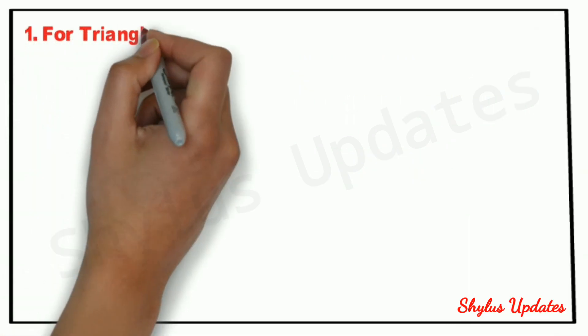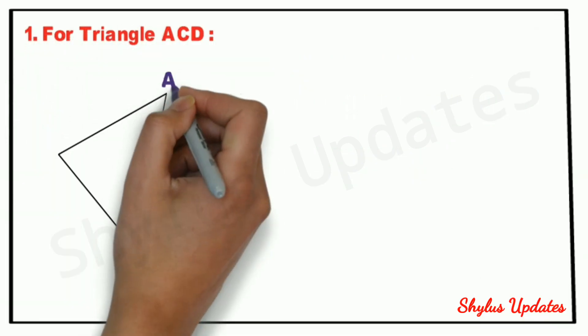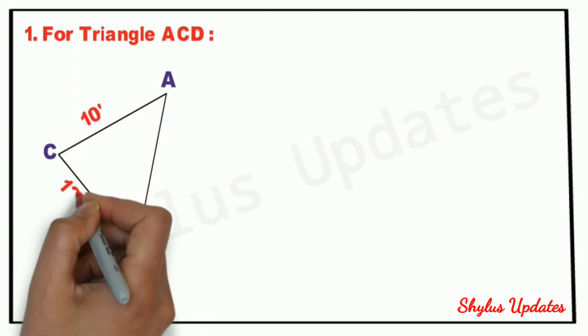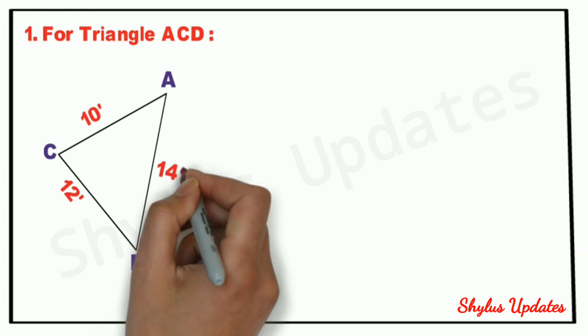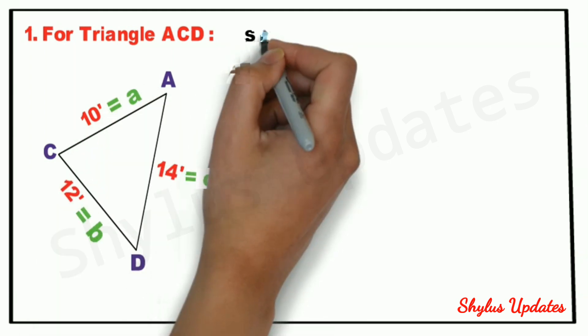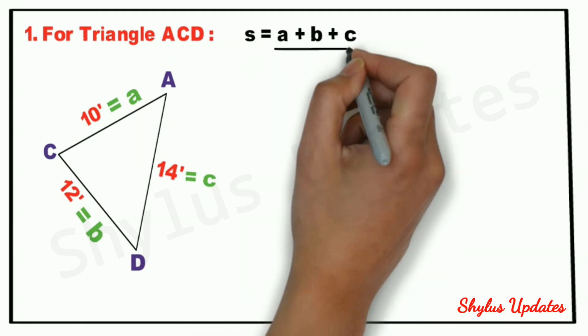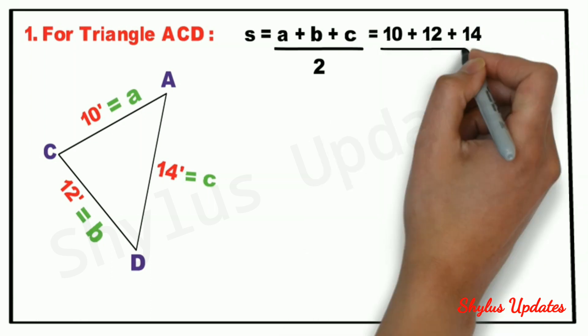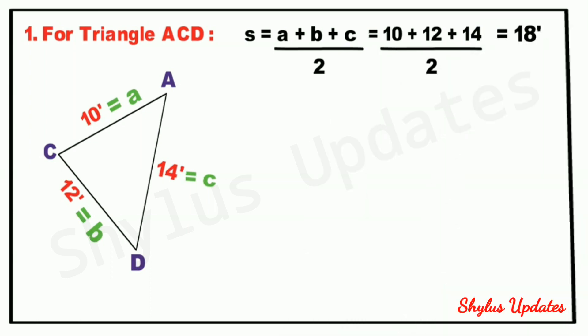Now, for triangle ACD: AC is 10 feet, CD is 12 feet, and AD is 14 feet. We know that s equals a plus b plus c upon 2. When we substitute the values, we get the answer 18 feet.